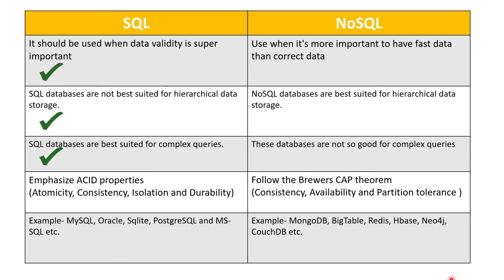SQL follows the ACID properties — Atomicity, Consistency, Isolation, and Durability — while NoSQL follows the CAP theorem — Consistency, Availability, and Partition Tolerance. Examples of SQL databases include MySQL, Oracle, and PostgreSQL. Examples of NoSQL databases include MongoDB, Redis, and HBase.